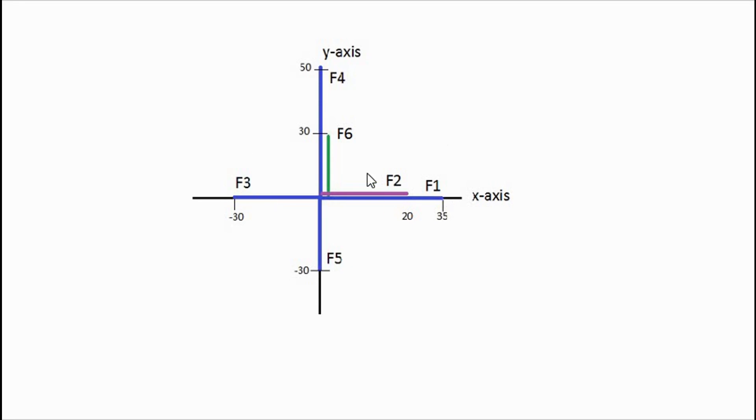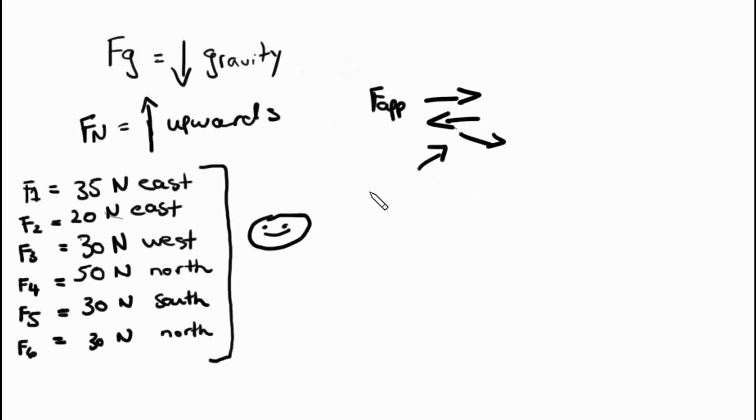F6 30 newtons north, I represented that in a green line. And then F2 was 20 newtons east, I represented that in a purple line. And F1 was 35 newtons east. So all of them are depicted here. The green and purple line purposes are to indicate that I've got another force going in the same direction. I cannot draw them on top of each other so we draw them next to each other. I drew my F6 next to my F4 to indicate that there's also another northerly direction, same with F2 and F1.